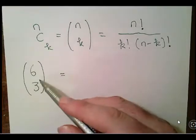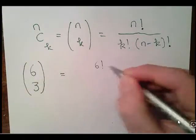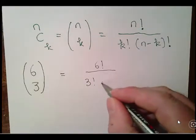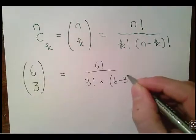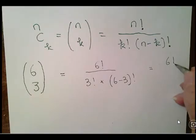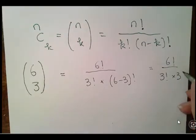This is 6 factorial over 3 factorial times 6 minus 3 factorial, which is also 3 factorial. So that's 6 factorial over 3 factorial times 3 factorial.